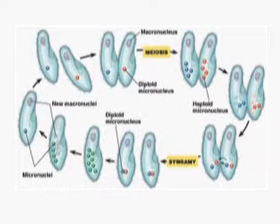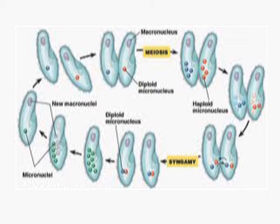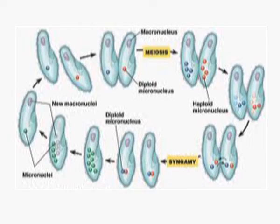Sexual reproduction is also found in some protists. For example, sexual reproduction in Paramecium occurs by conjugation. Two Paramecia come close together and a protoplasmic bridge is formed between them. Exchange of genetic material takes place through this protoplasmic bridge — genetic material moves from one Paramecium to the other and back, and further meiotic division takes place. Although sexual reproduction is occurring, it is different from higher forms in that two whole individuals are involved in the reproduction process.